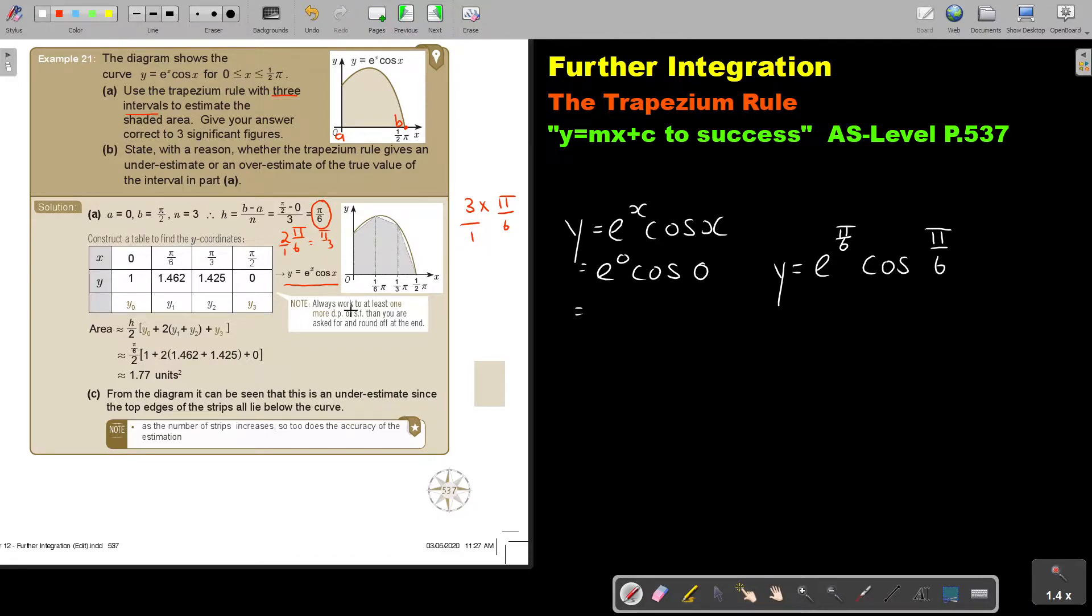Remember, always work to at least one more decimal place or significant figure, in this case significant, than the one you're asked. Then you put h. Remember, h is that pi divide 2. Then the first one. Then this middle one. Remember, this is the middle ones. I multiply with 2, because there are 2 of them. And then the last one, 0. And then I just press it on the calculator.